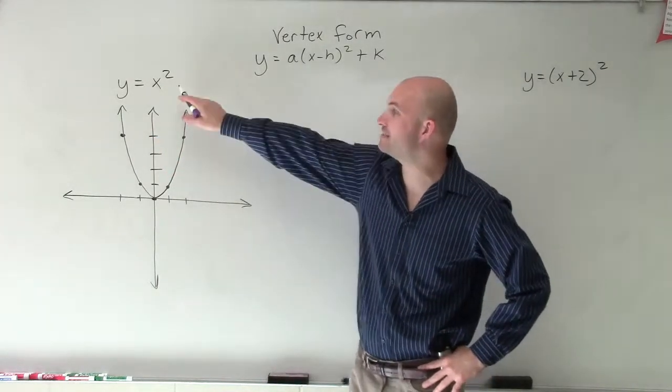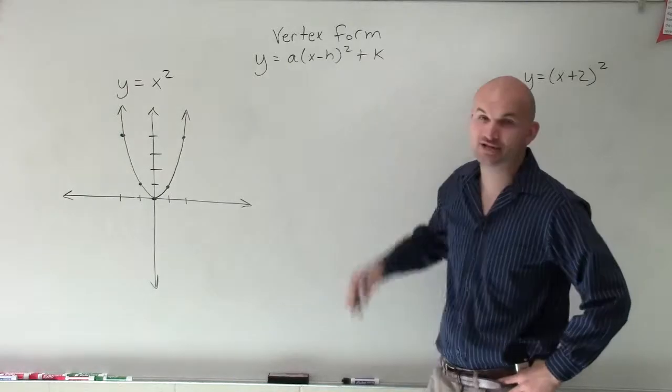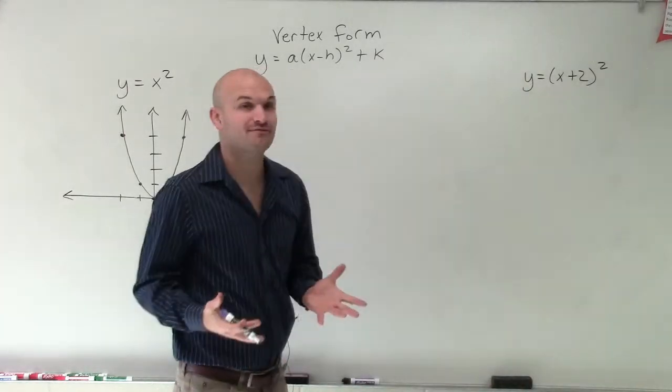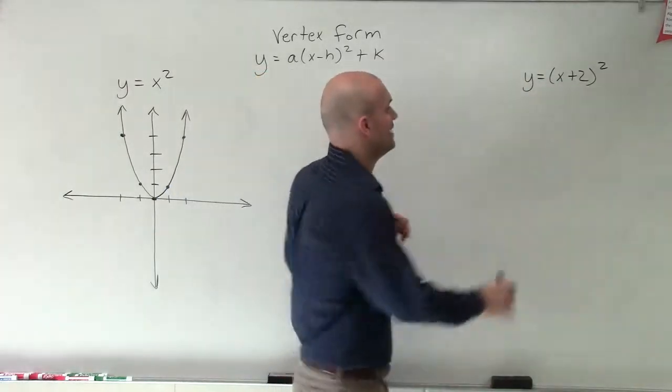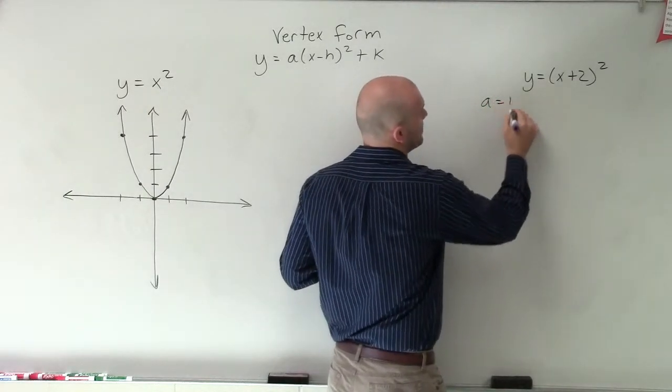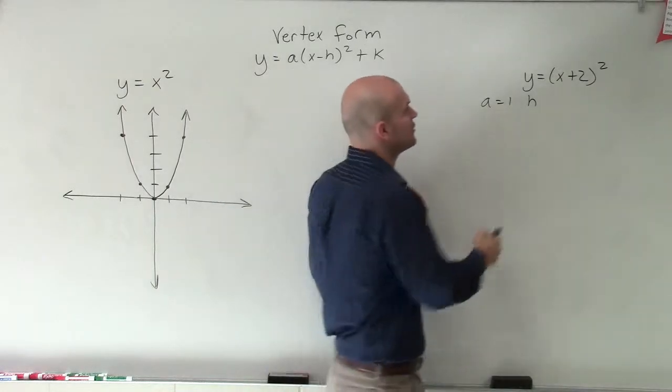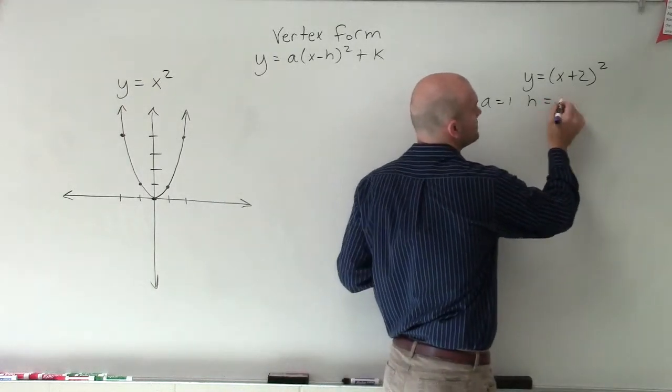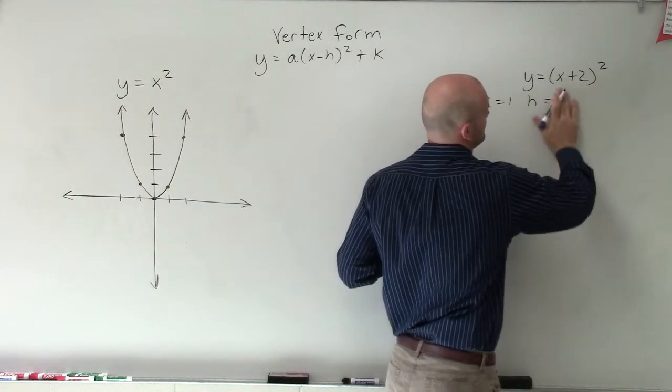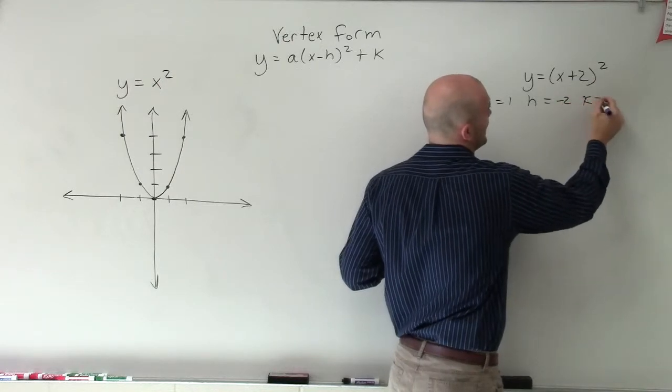Now our parent graph, you can see that my a value is 1, and h and k are both 0. Well, in this case, we have a little bit different case. We still have a equals 1, but now we have h equal to negative 2, and then we have k equals 0.